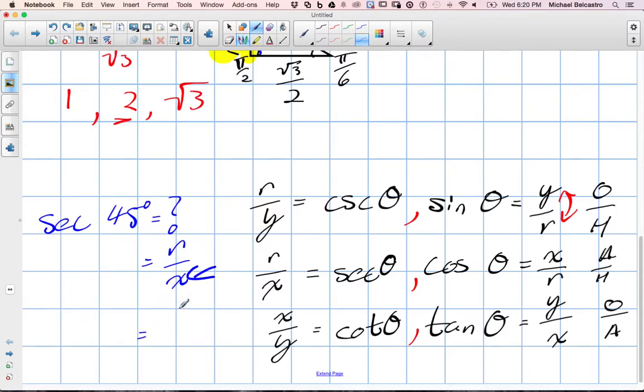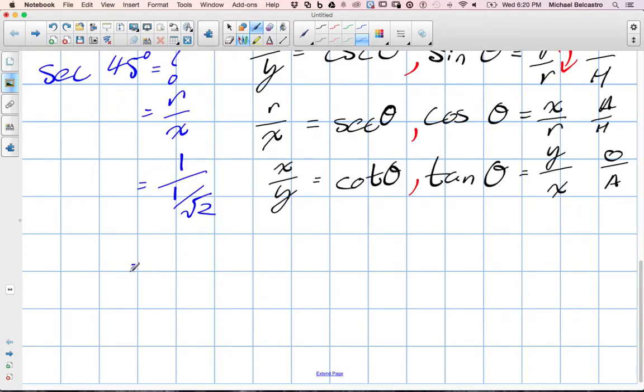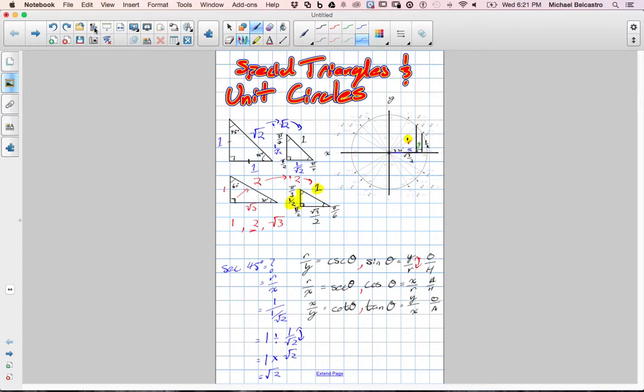So we've got to do a little division of fractions here. 1 divided by 1 over root 2. When we divide fractions, we turn it into a multiplication question and we invert. So root 2 over 1, which is just root 2. So 1 times root 2 is root 2. So secant 45 is equal to root 2. Okay.